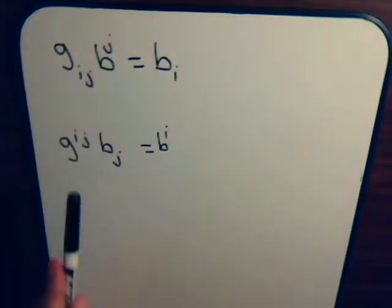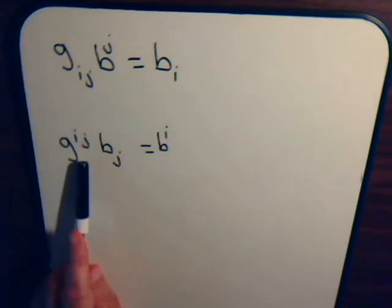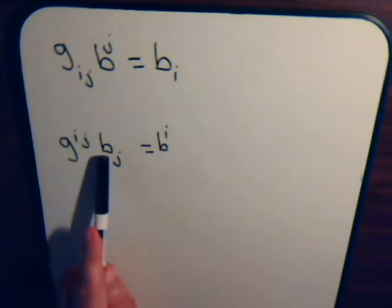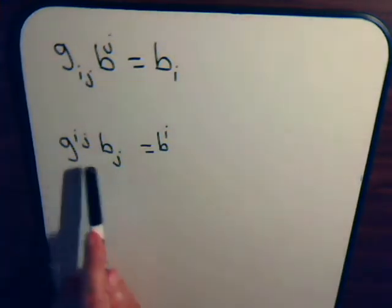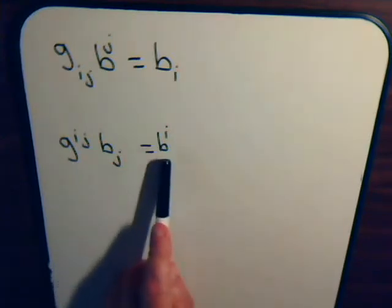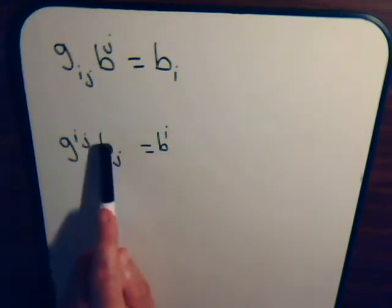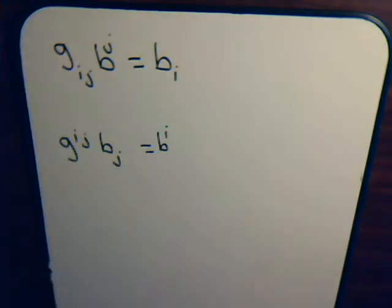Likewise, if we have the metric tensor expressed in contravariant form, then if this is a covariant component of some vector or tensor, then when this operates on this it gives us a contravariant component of whatever vector or tensor that this belonged to.